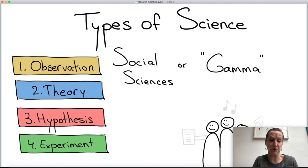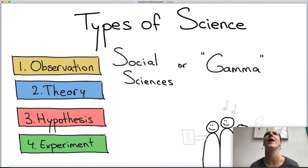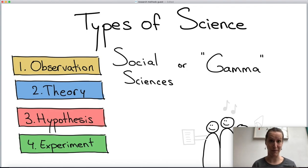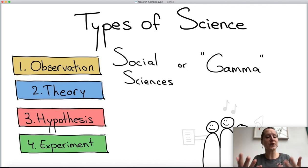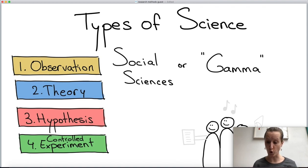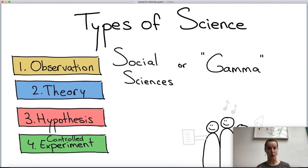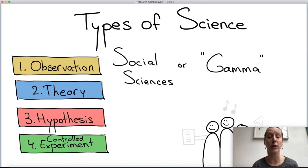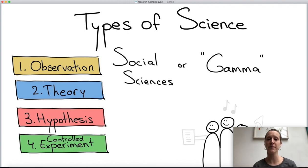In the social sciences, the scientific method is harder to apply because people know they're in an experiment. If you bring people into the lab and say 'here's a programming language, try it out,' they might behave differently than they normally would — they might make more mistakes out of self-consciousness, or fewer mistakes because they want to perform well. You can still do experiments in the social sciences, but these are often controlled experiments with a control group and an experimental group where neither the participants nor the researchers know which group is which.